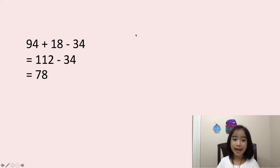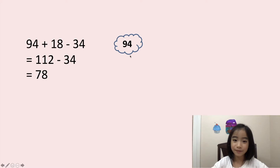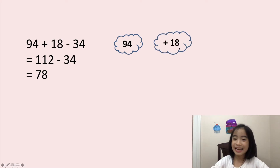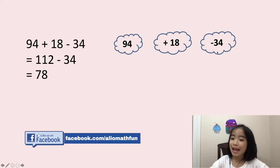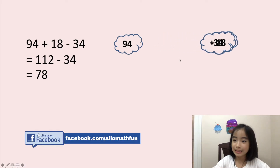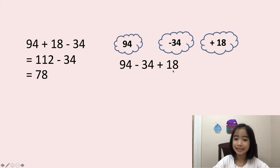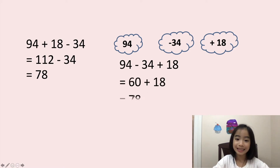You can also rearrange the addition and subtraction, as long as you keep the addition and subtraction signs with the numbers you are adding and subtracting. Here is the 94, and here is the 18 with the addition sign. Here is the 34 with the subtraction sign. Now let's switch the plus 18 and the minus 34. We have 94 minus 34 plus 18. 94 minus 34 equals 60. 60 plus 18 equals 78.